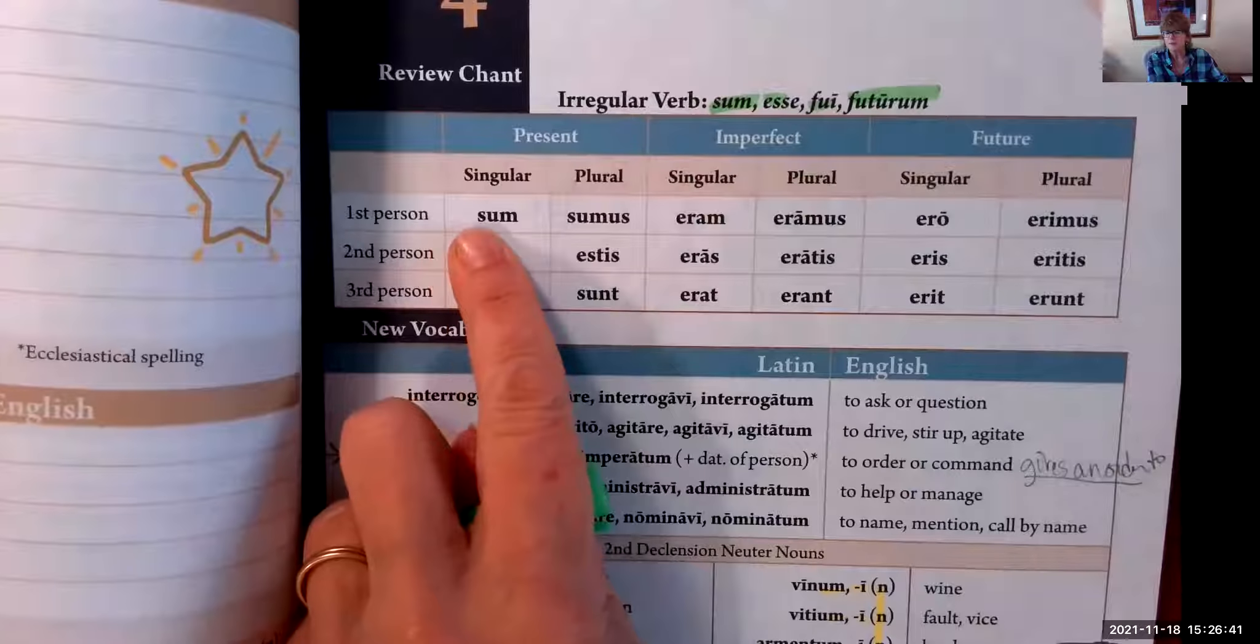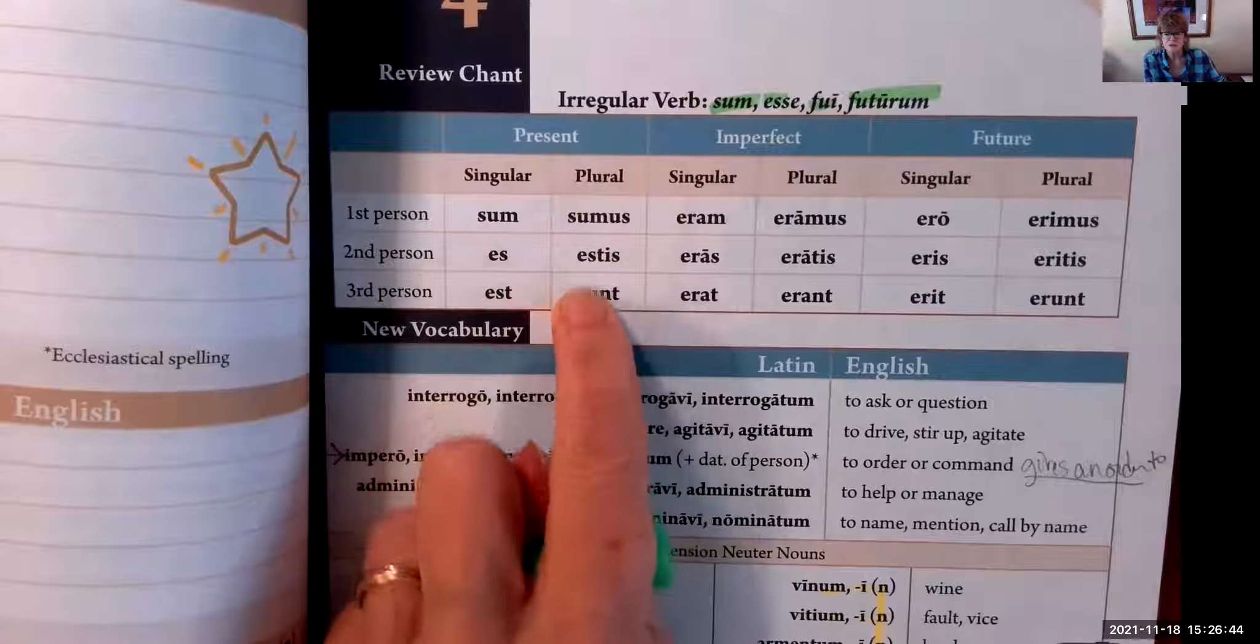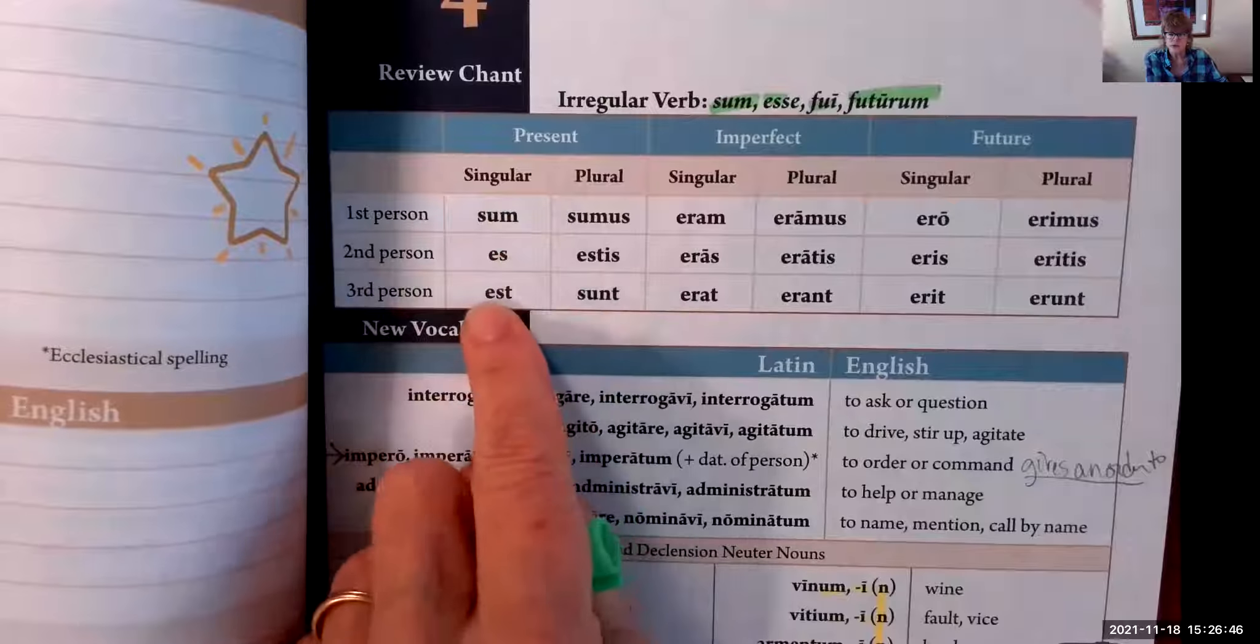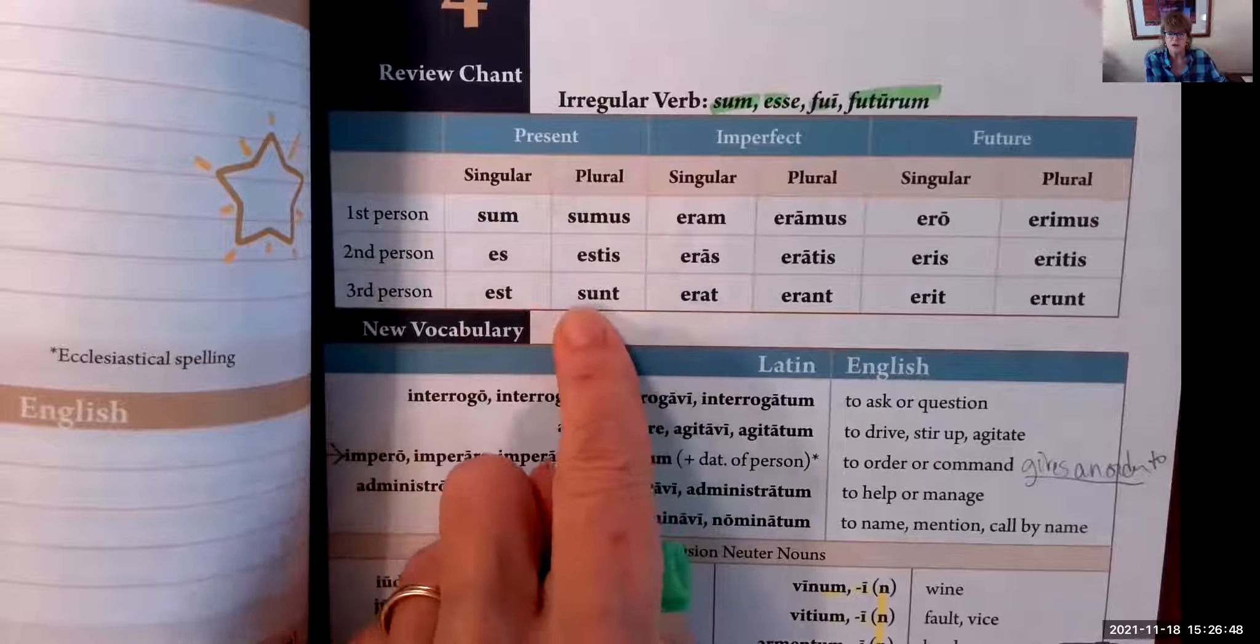And here they are. Sum, es, est, sumus, estis, sunt. I am, you are, he/she/it is, we are, you all are, they are.